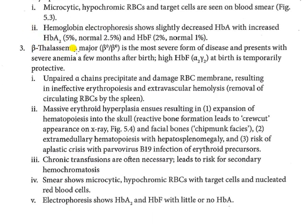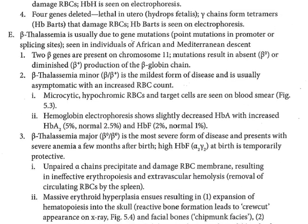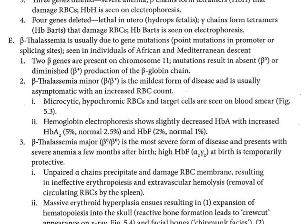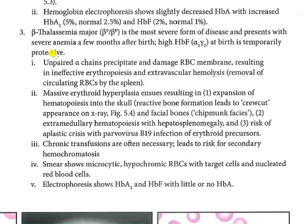In beta thalassemia major, both beta genes are absent (B0/B0). This is the most severe form, presenting with severe anemia a few months after birth. HbA will be completely absent or very low, and HbF (alpha-2 and gamma-2) will be high, as fetal hemoglobin production continues after birth.